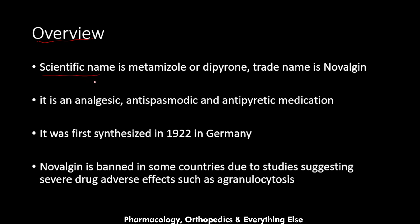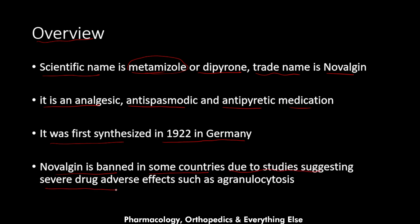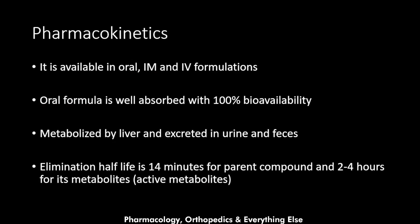The scientific names of novalgine are metamazole or dipyrone. The most famous trade name is novalgine. It is an analgesic (relieves pain), antispasmodic (relieves spasm), and antipyretic (relieves fever) medication. It was first synthesized in 1922 in Germany. Novalgine is banned in some countries due to studies suggesting severe drug adverse effects such as agranulocytosis — more on that in the adverse effects section.